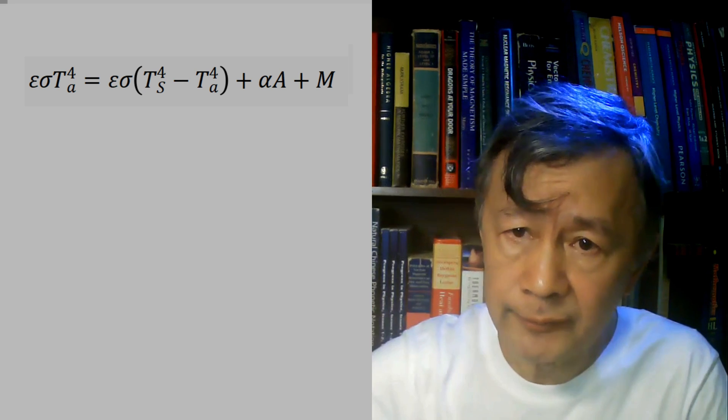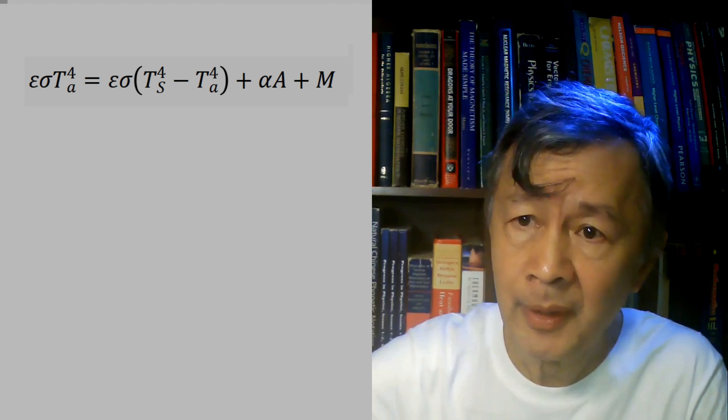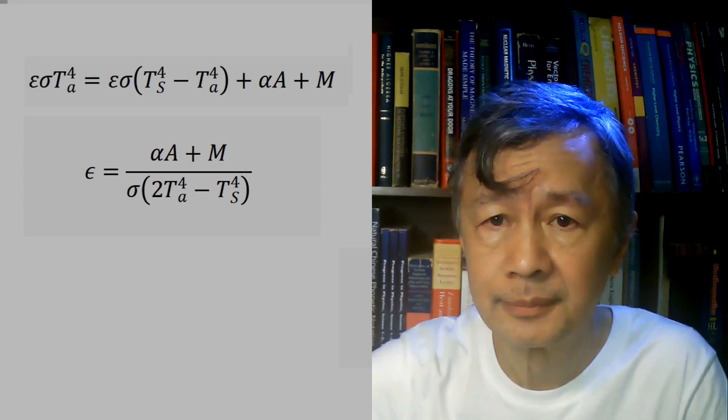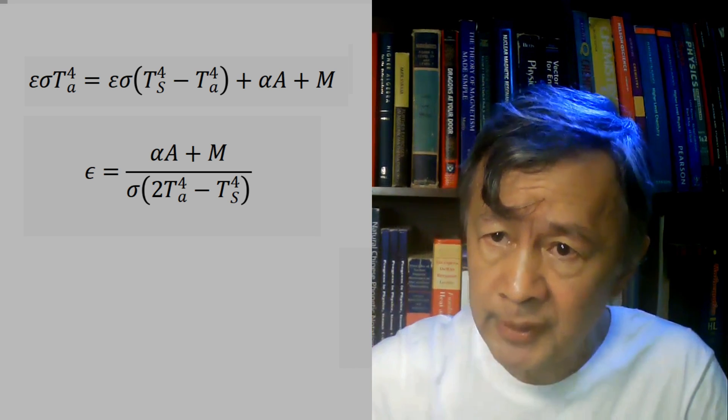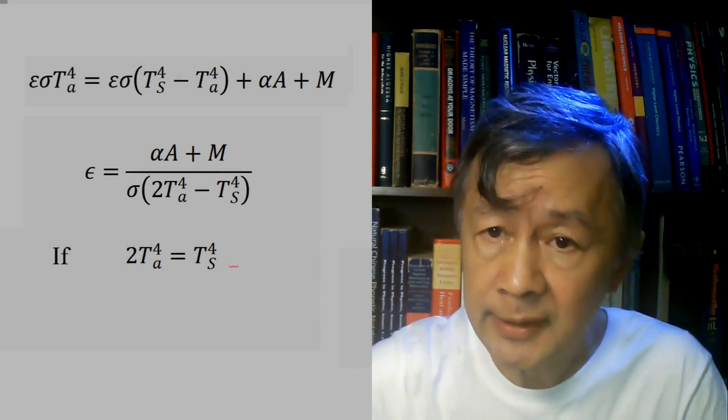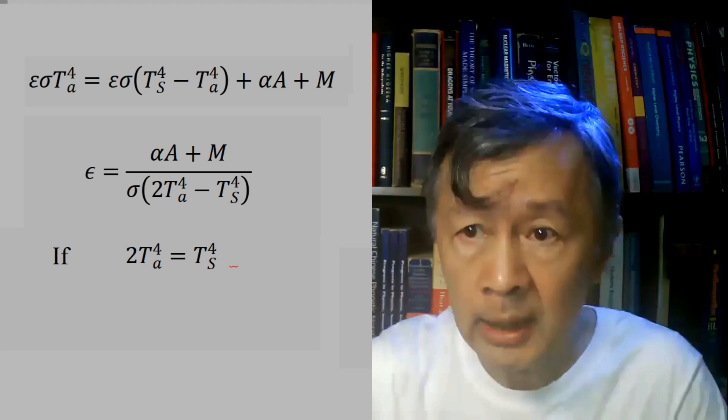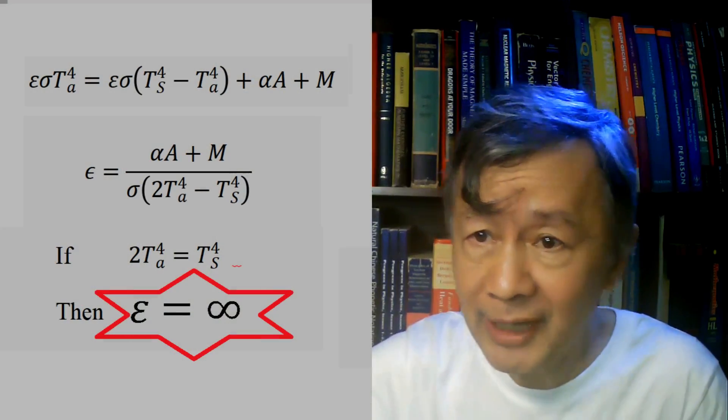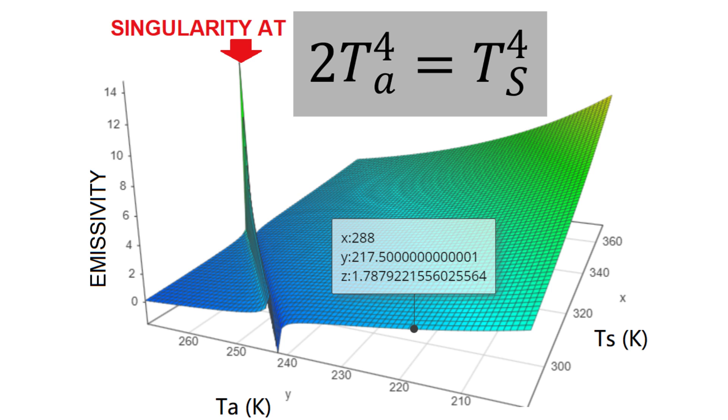If we solve for the emissivity epsilon from this equation, we obtain this formula. What can you see? If one assumes the strange equation is valid, then the denominator in this equation would be zero. As a result, the emissivity would be infinity, as you can see in this deep abyss, in this 3D diagram.